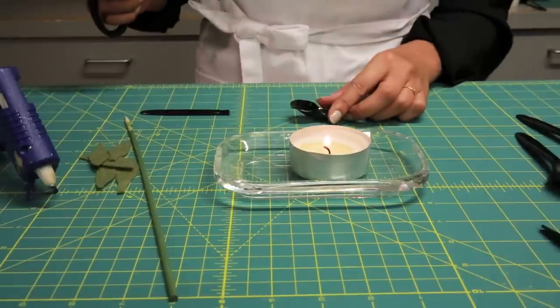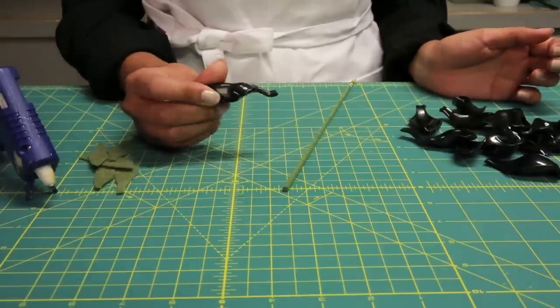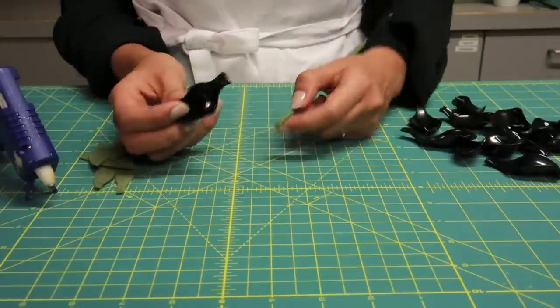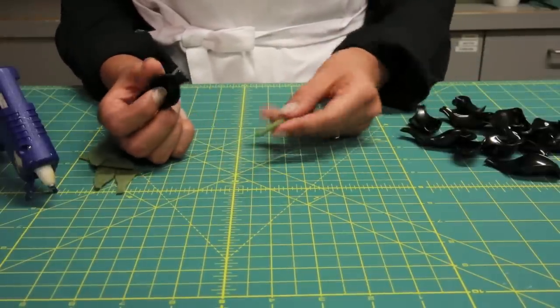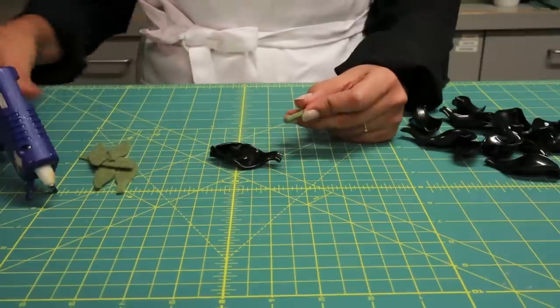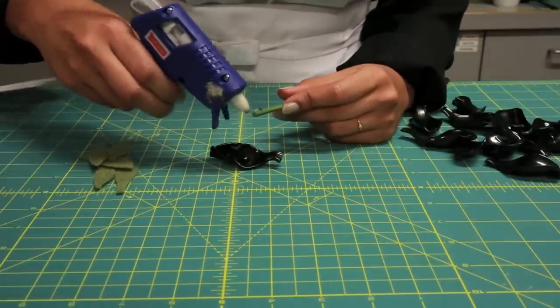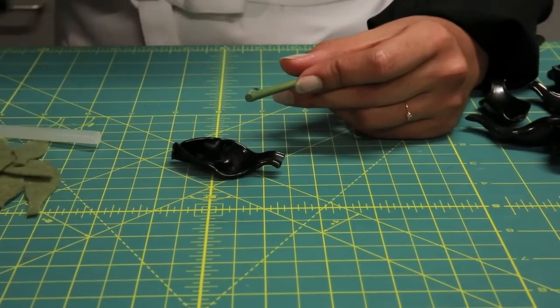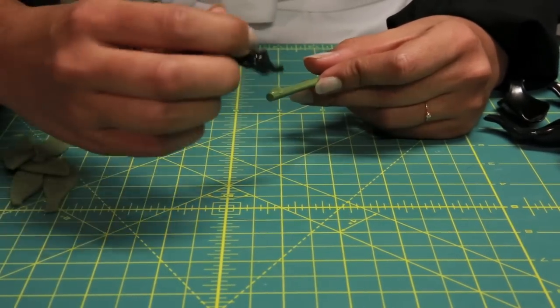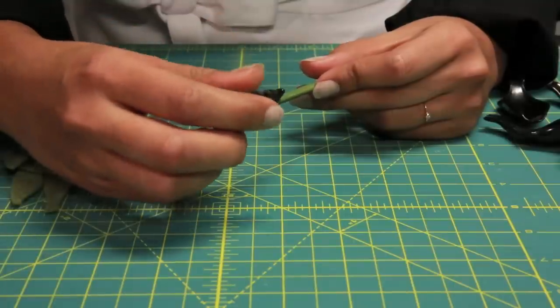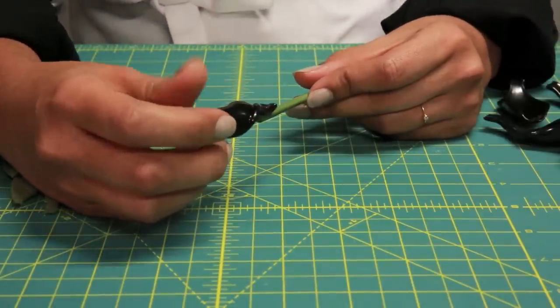And then do that for the rest. Find the center, the one you folded inwards, and you're going to start with that one. You're going to get your skewer and your glue gun. Just put a little bit of glue on the top of the skewer, and glue that right on there.